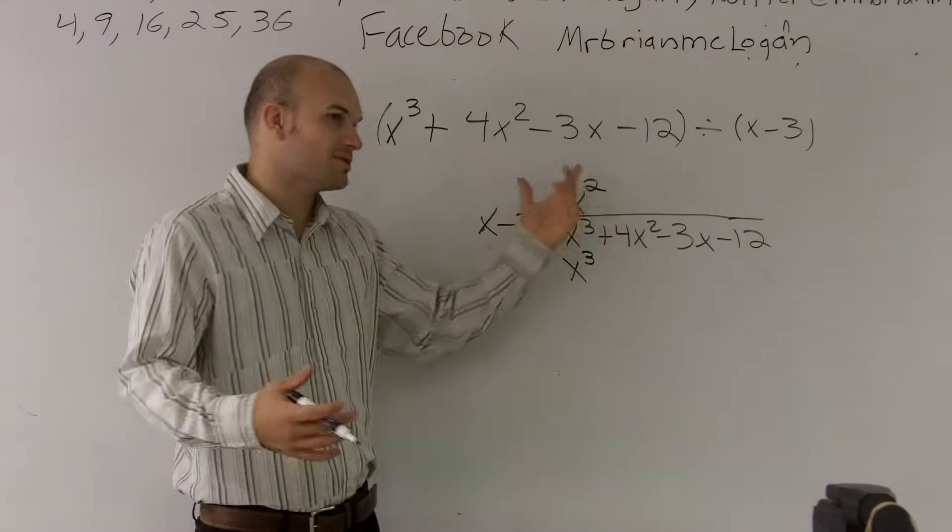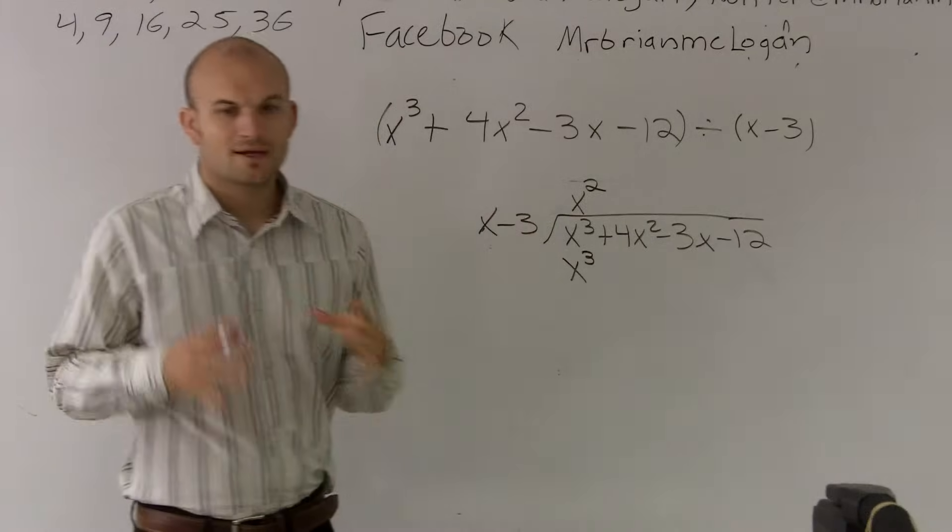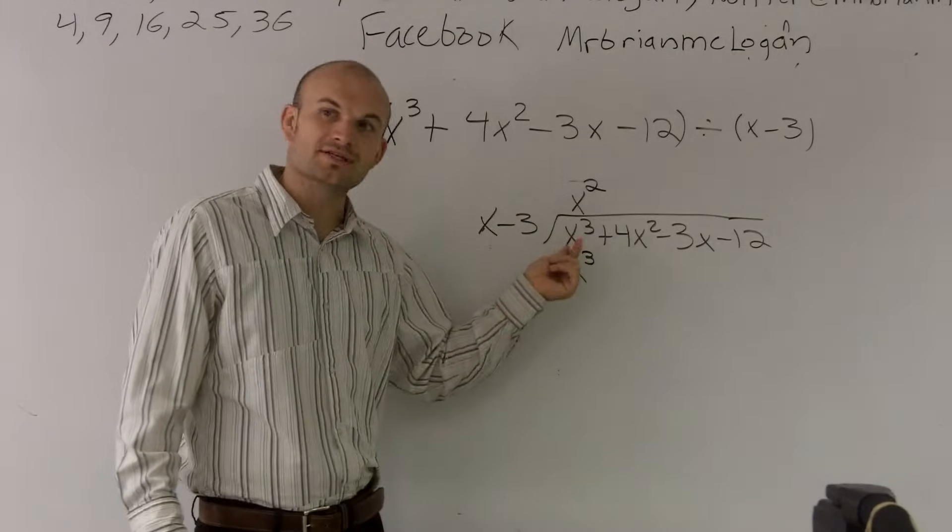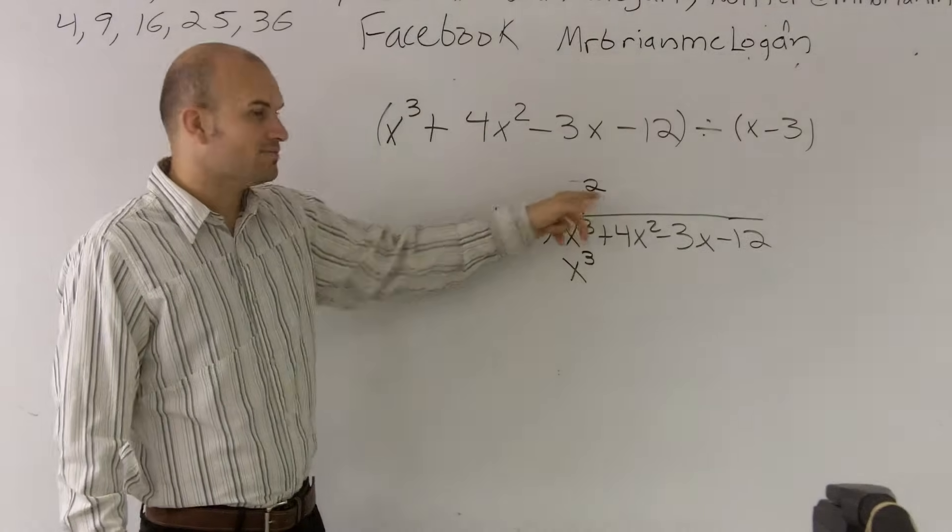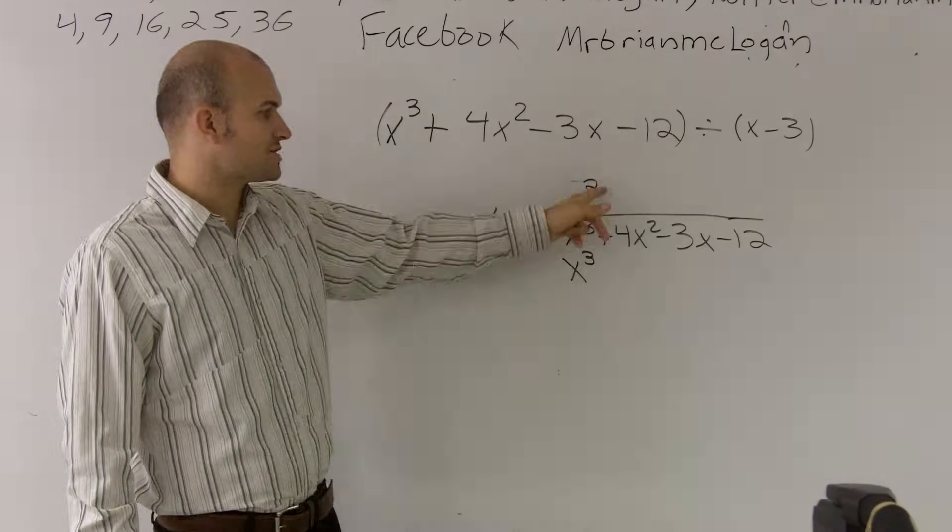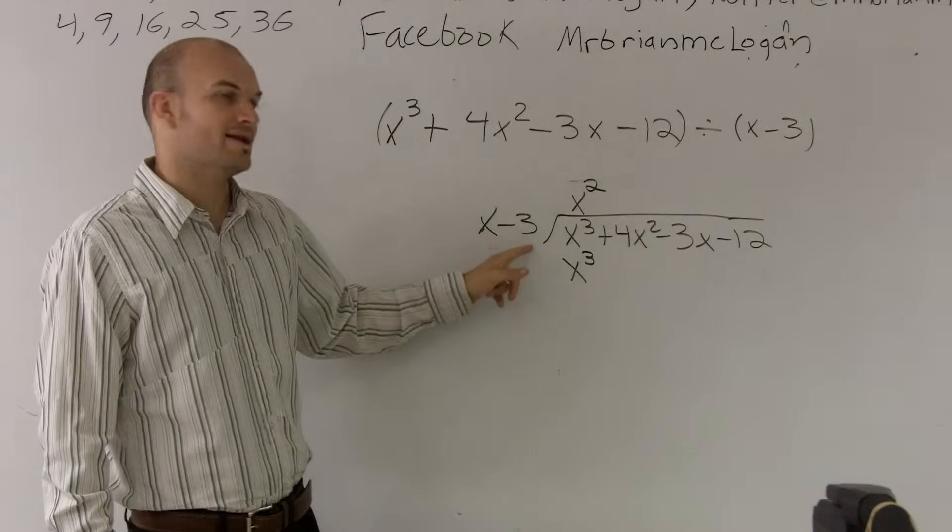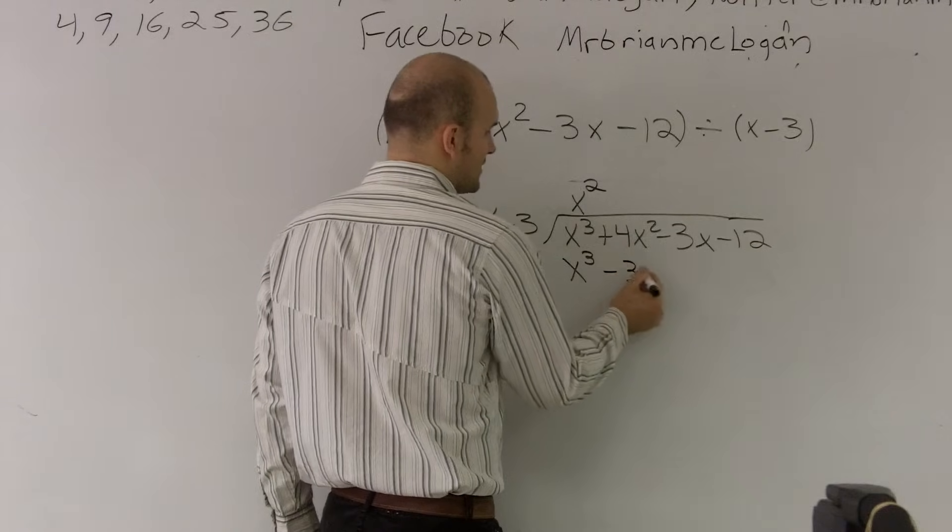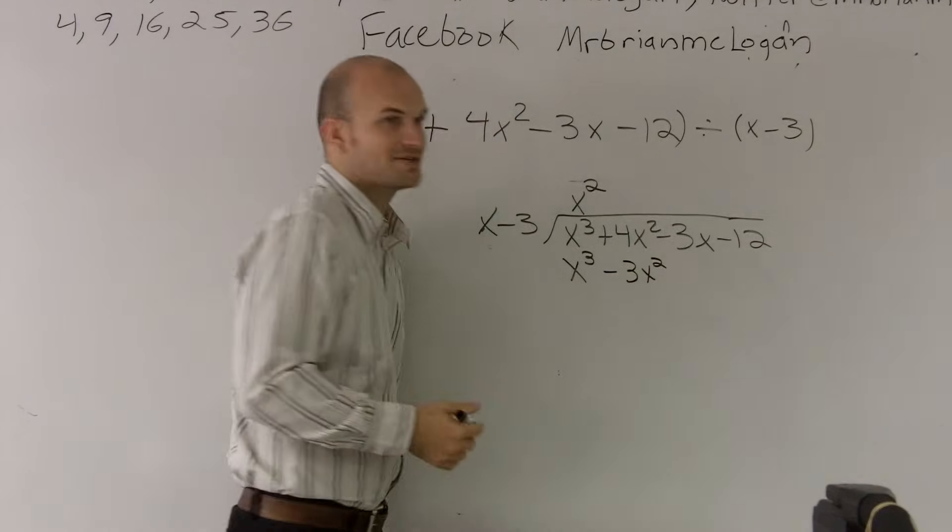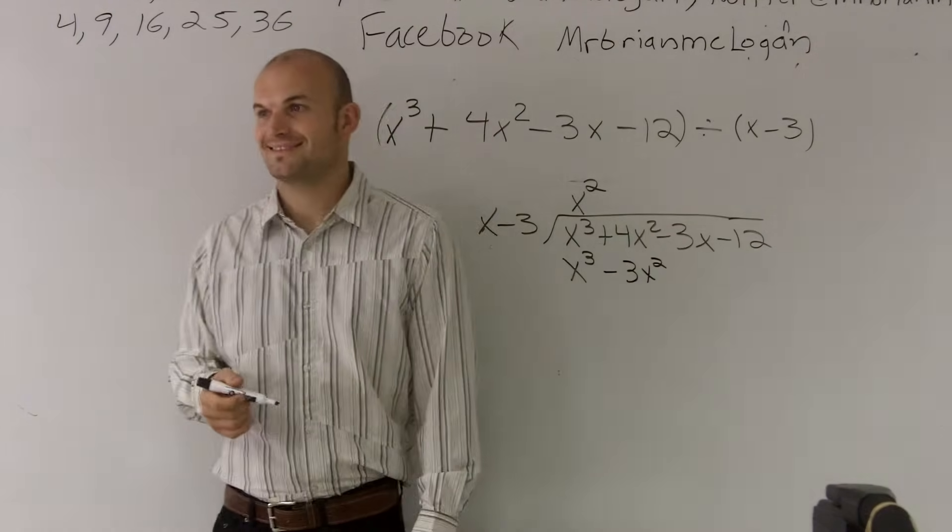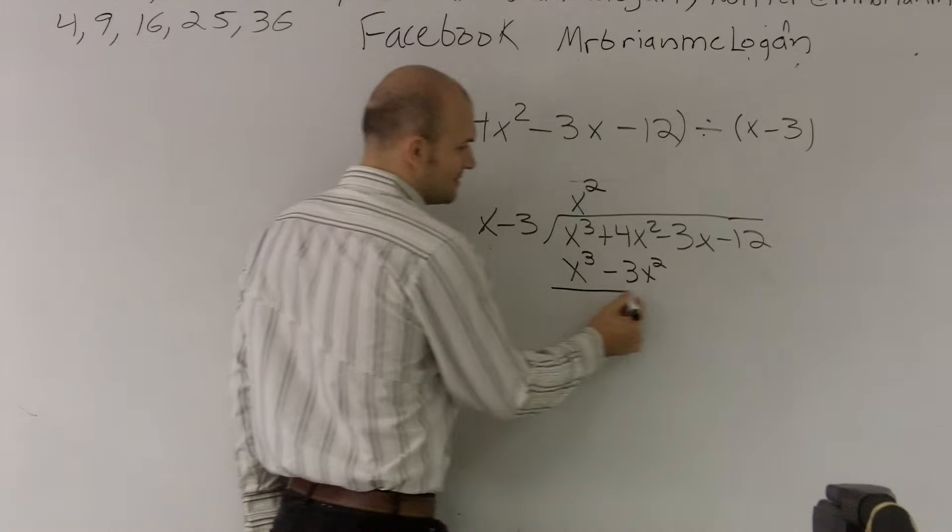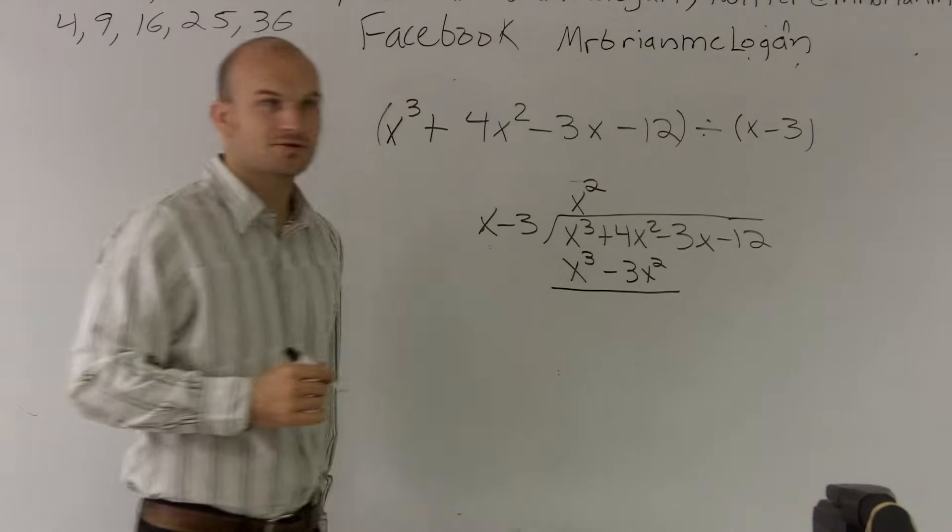Now, this is where we get our negative 3 back into the game. This is how we use this negative 3. When I multiply back, I've got to make sure I multiply the x squared also times my negative 3. So x squared times negative 3 is a negative 3x squared. Do you guys want to know where everybody makes their mistake? Right here. When you're done with that, we need to subtract the two lines, right? So everybody writes a subtraction sign.